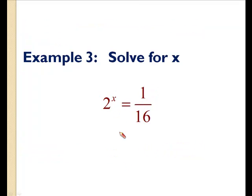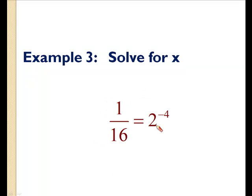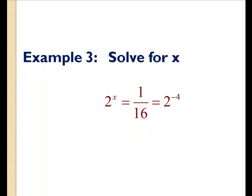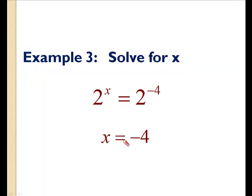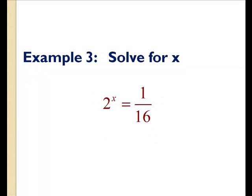Let's try one more: 2 to the x equals 1 over 16. We can rewrite 1 over 16 with a base of 2. 1 over 16 with a base of 2 becomes 2 to the negative 4. If you remember from the lessons with negative exponents, when you have a negative exponent, you take the reciprocal of your base and make the exponent positive. So 2 to the x equals 1 over 16 is the same as 2 to the x equals 2 to the negative 4. The only value for x that will make this true is negative 4, so x equals negative 4.